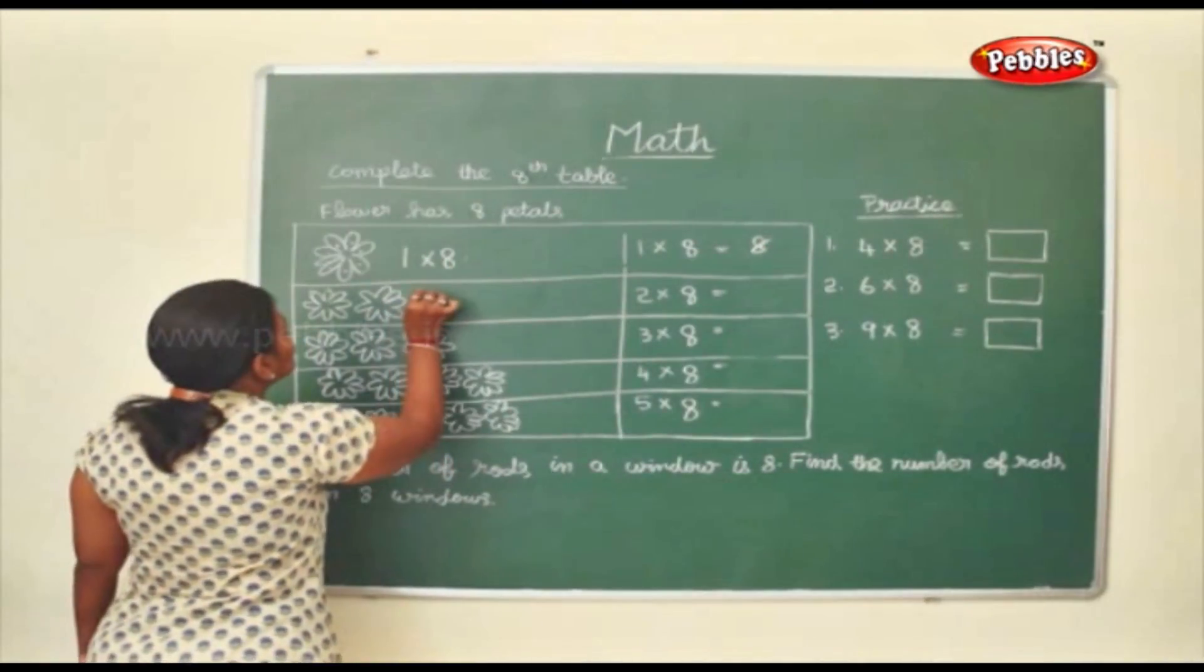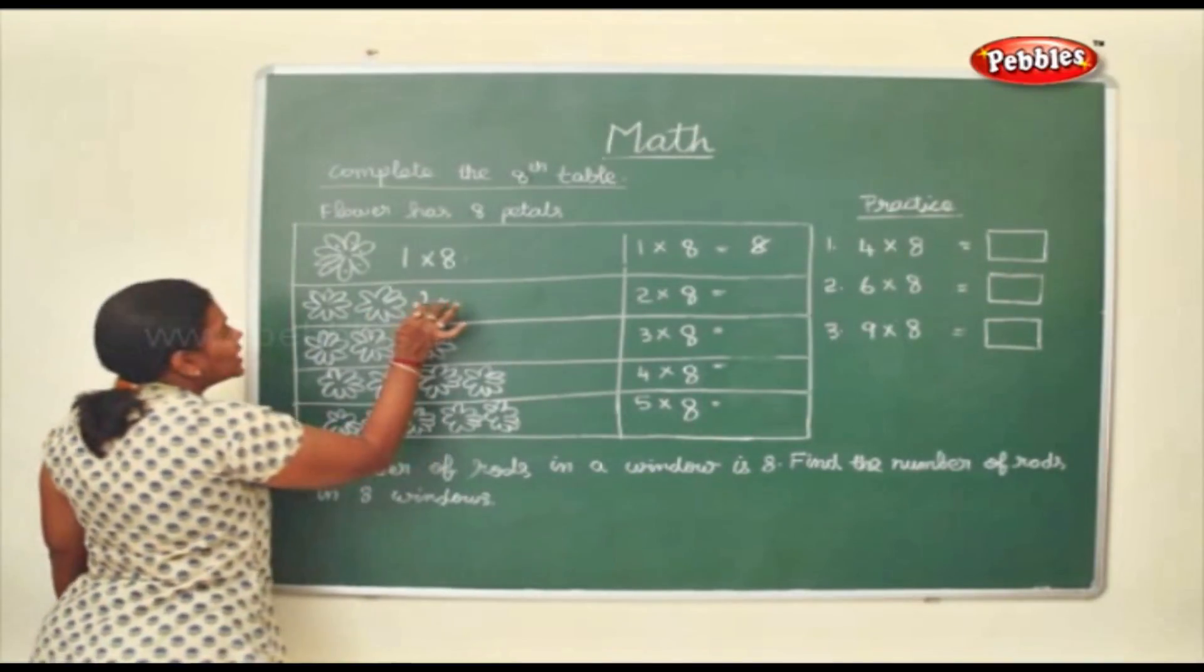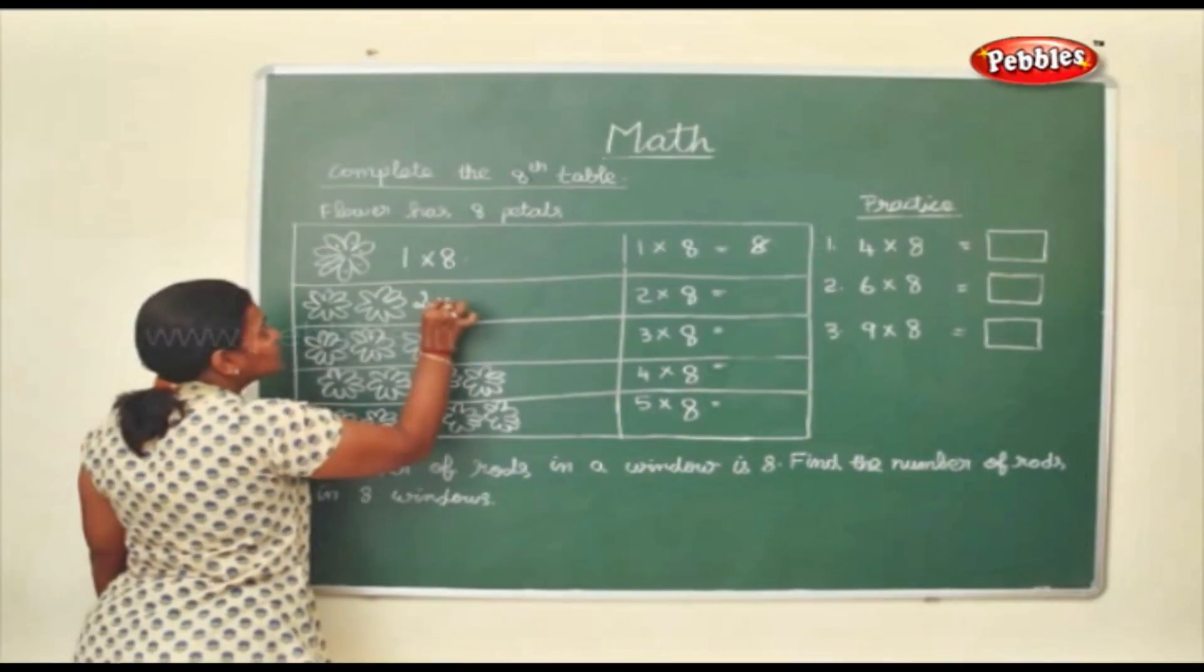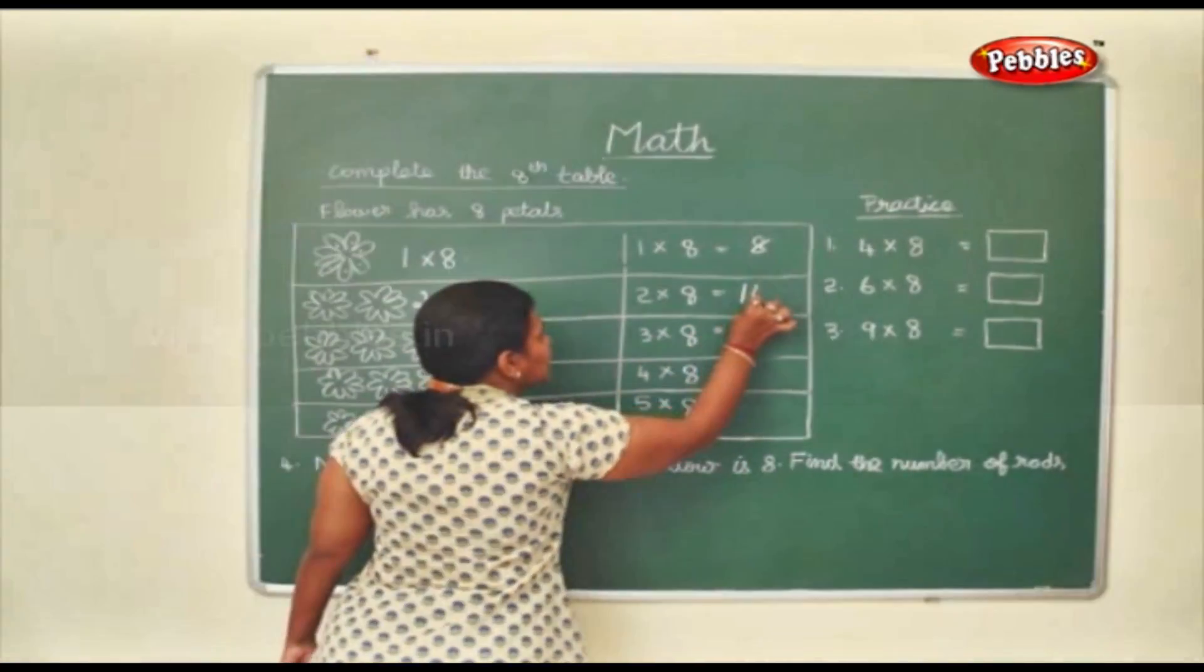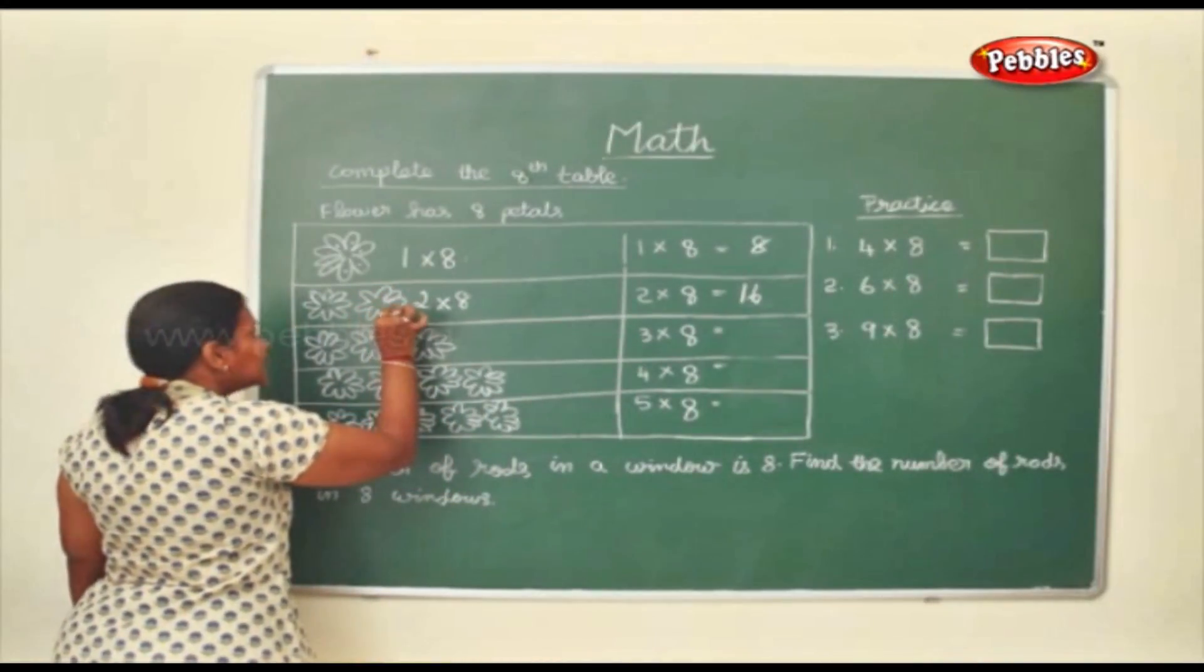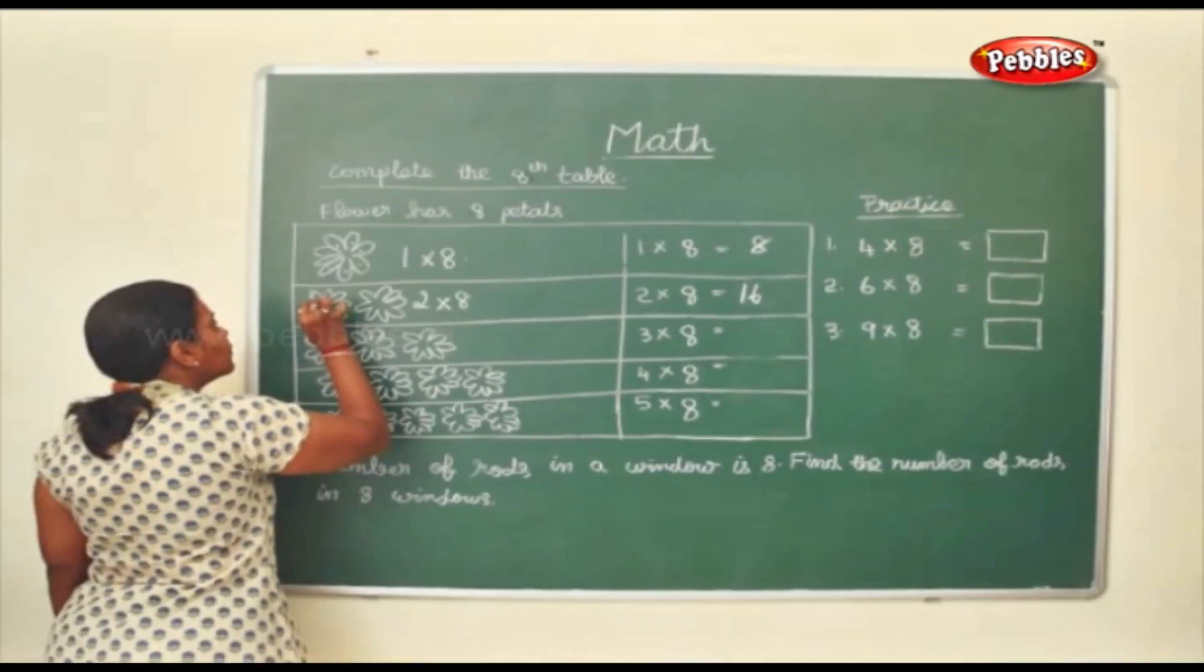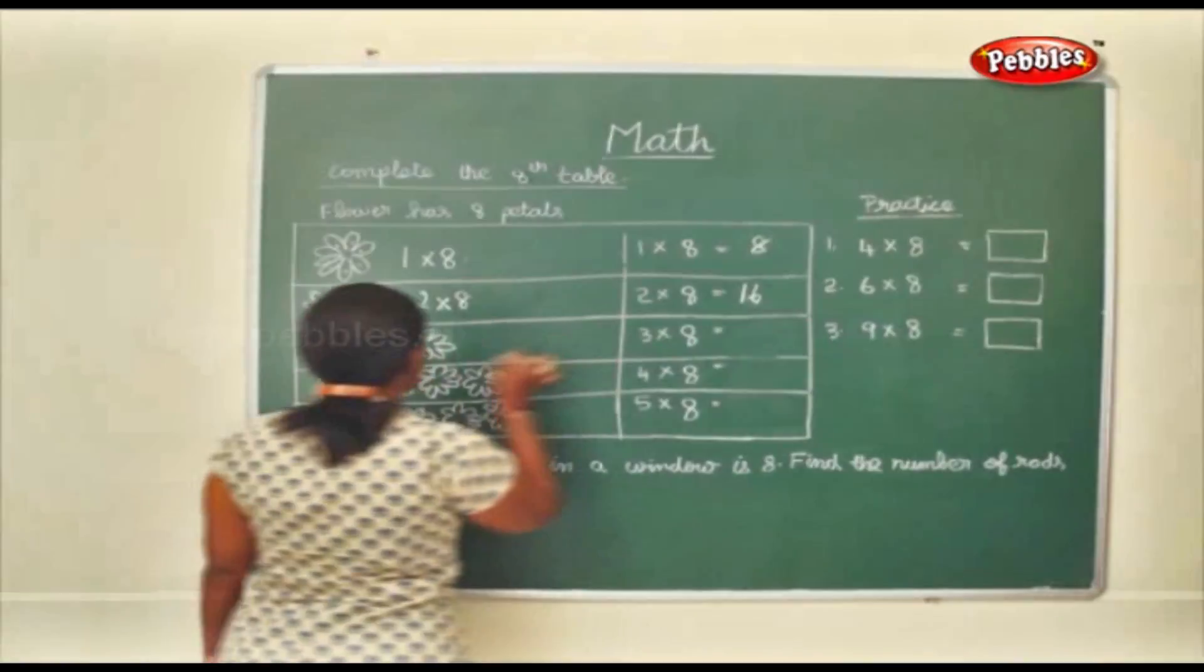Now 2 flowers plus these 8 petals. So 8 plus 8, 2 into 8. It will be 16 if you see. 1, 2, 3, 4, 5, 6, 7, 8 plus 1, 2, 3, 4, 5, 6, 7, 8 plus 1, 2, 3, 4, 5, 6, 7, 8. As I told you, it is a repeated addition. So 2 into 8 will be 16.